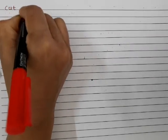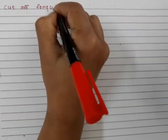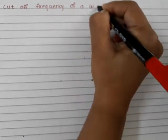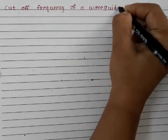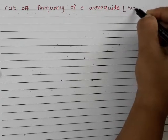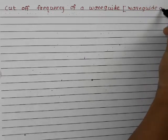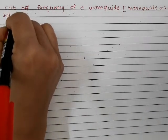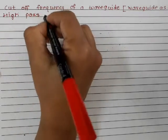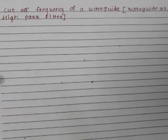Hello all. In the previous session we discussed the propagation of the TM wave through a waveguide. Today we'll discuss some of the basic parameters of the waveguide, starting with the cutoff frequency. We'll consider the waveguide as a high-pass filter. This means the cutoff frequency of a waveguide is nothing but the minimum frequency which the waveguide can allow to pass.